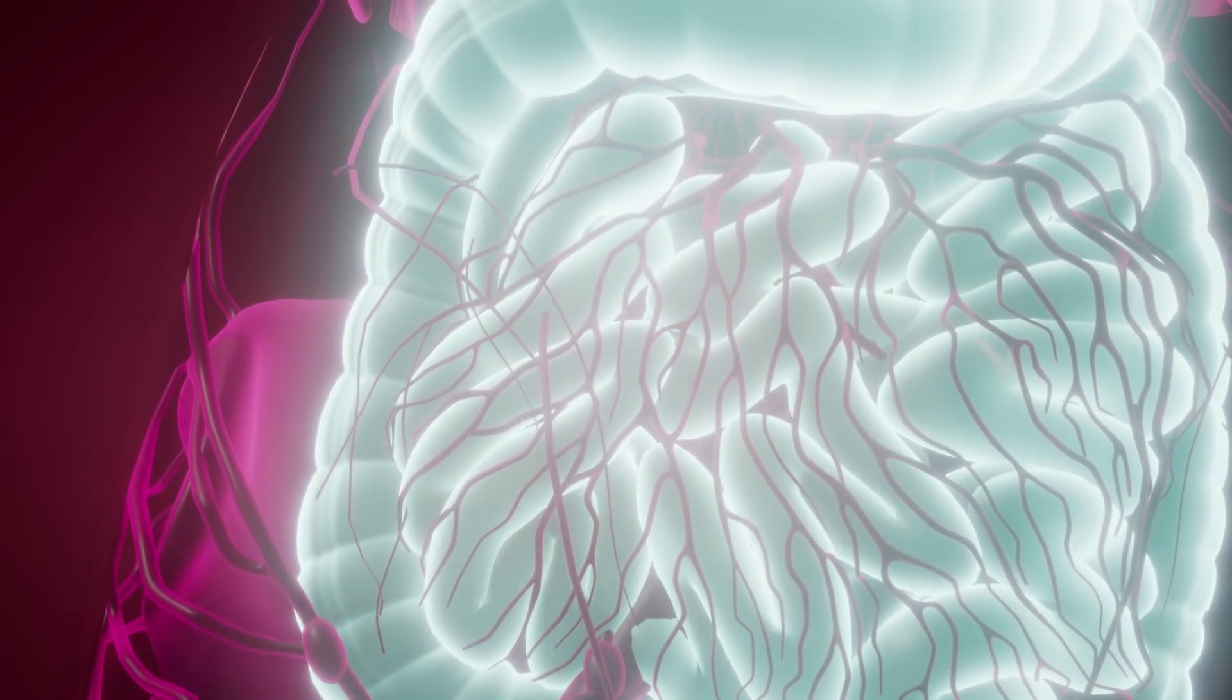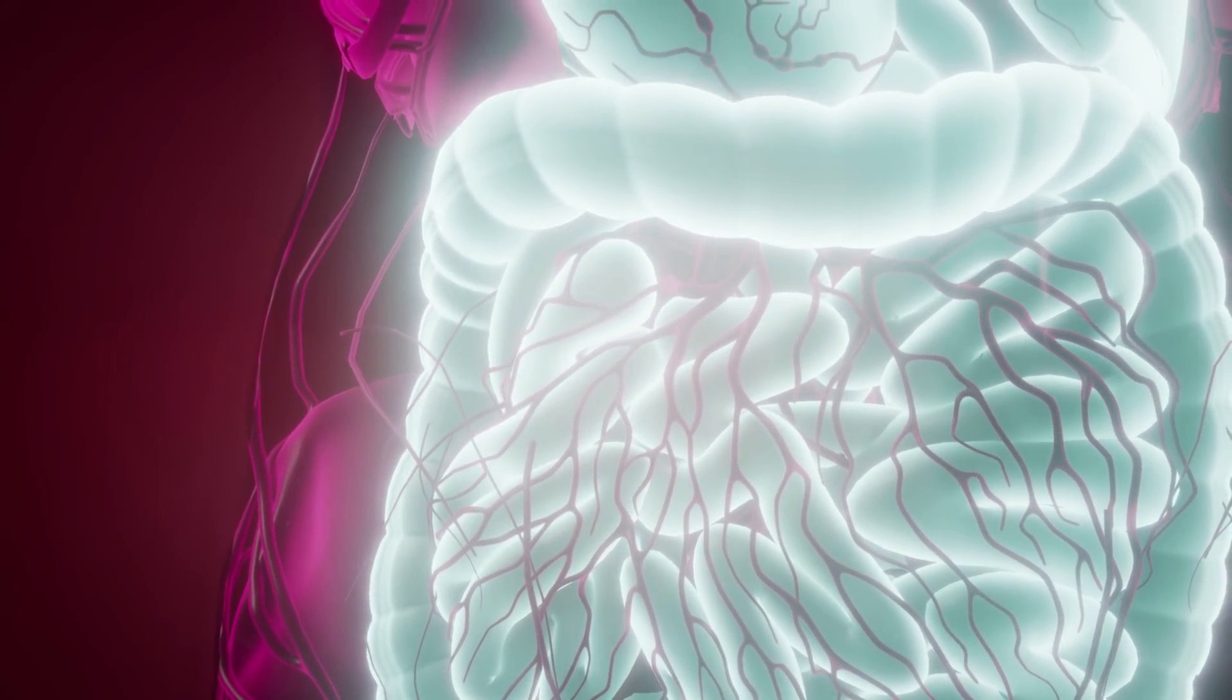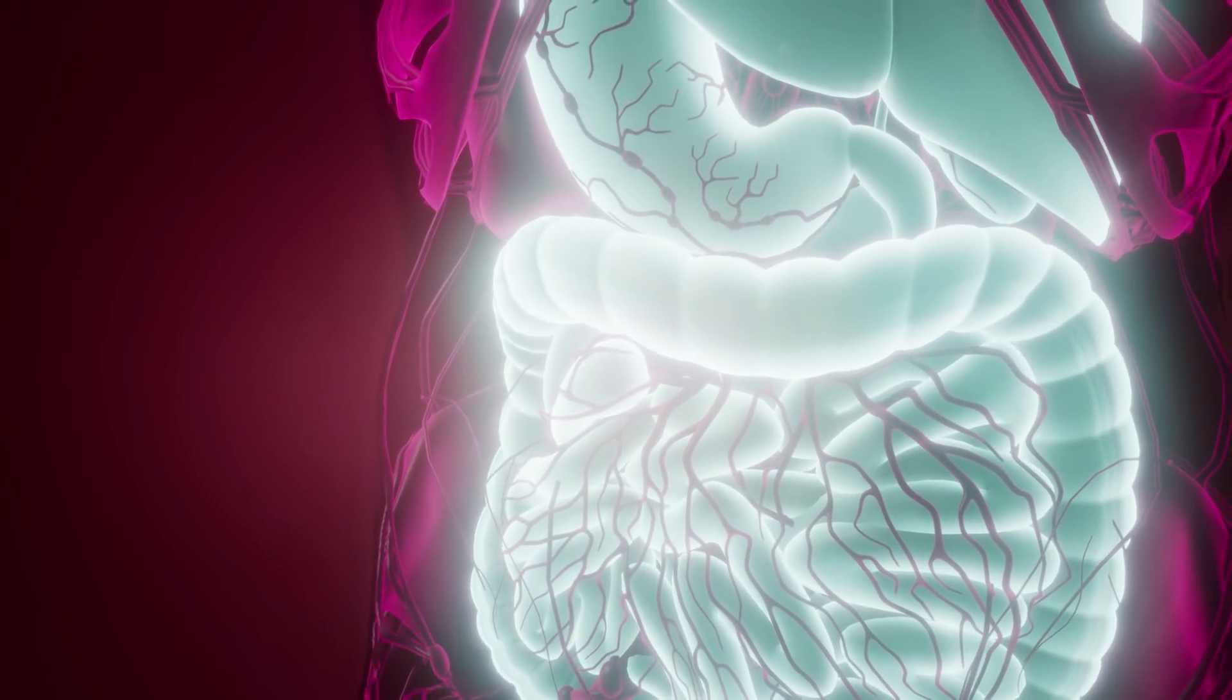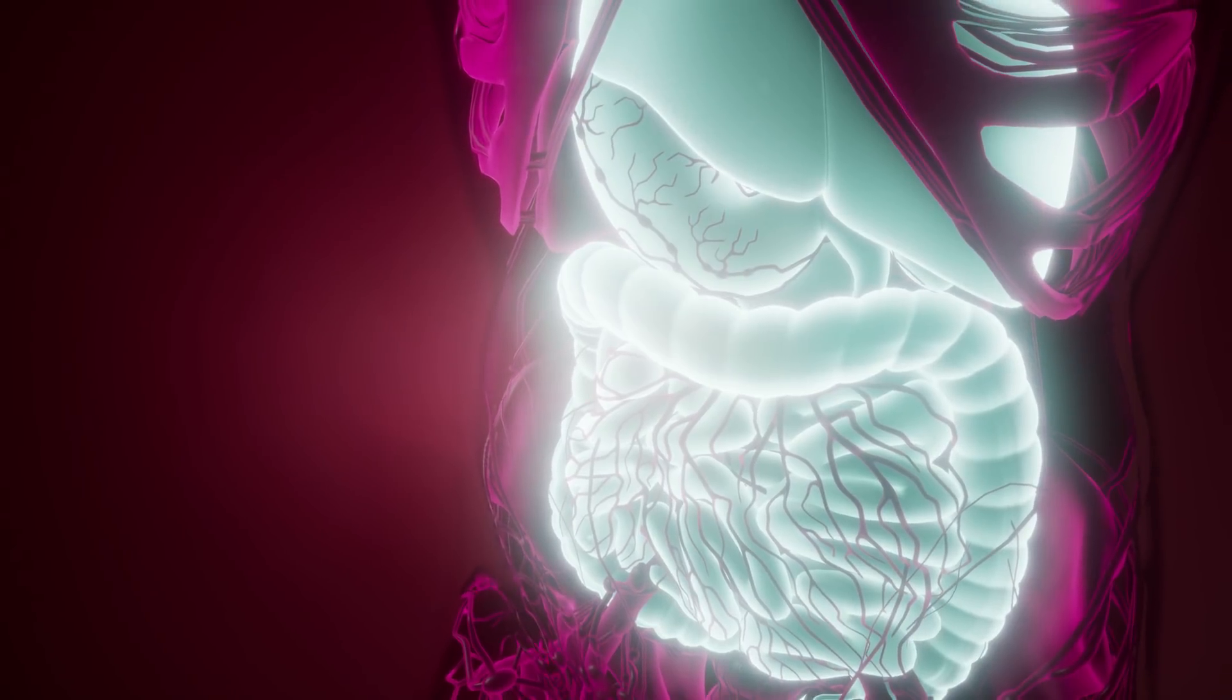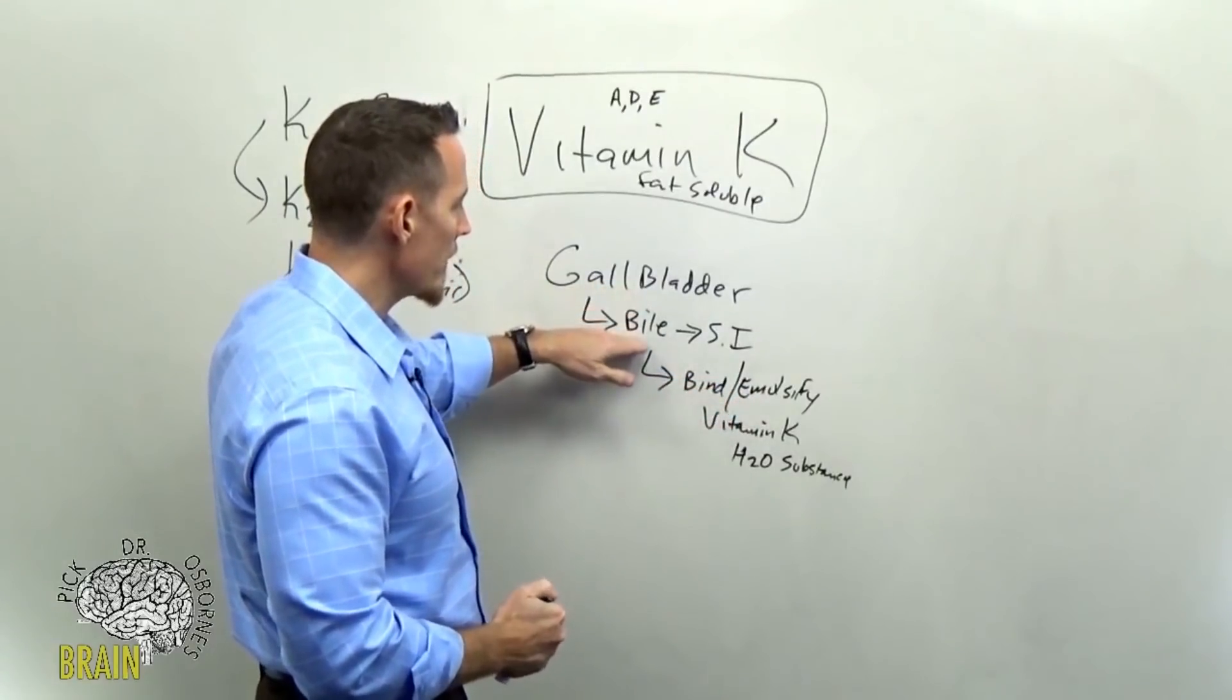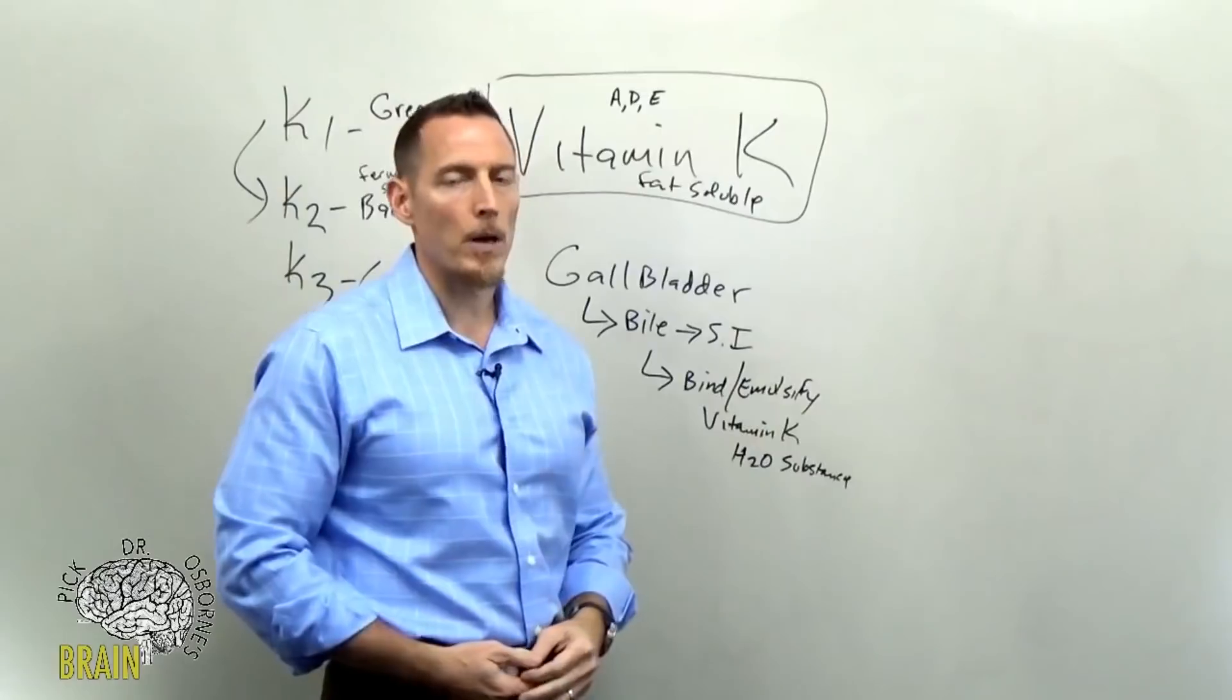The bile salts bind or emulsify vitamin K, and when they do that, it turns vitamin K into a water-soluble substance that can now be properly absorbed across the intestinal lining. In essence, you've got to have a functioning gallbladder and a healthy liver to be able to properly secrete the bile acids to emulsify that vitamin K for proper absorption.